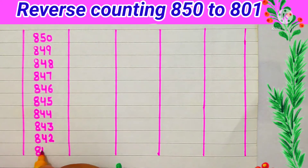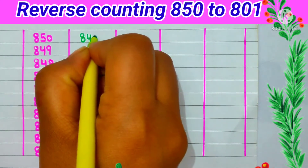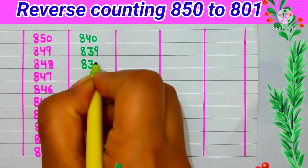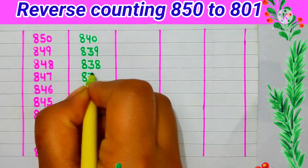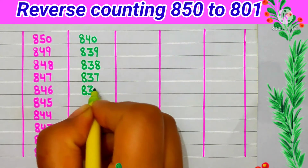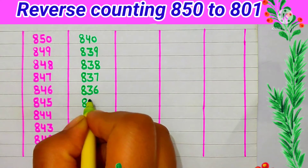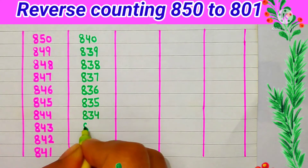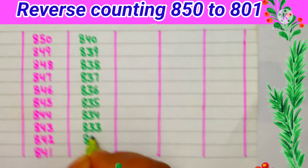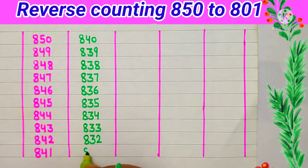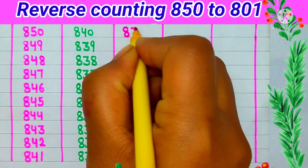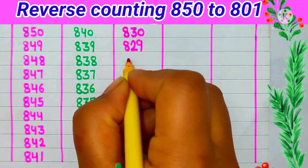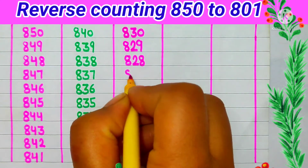842, 841, 840, 839, 838, 837, 836, 835, 834, 833, 832, 831, 830, 829, 828, 827.